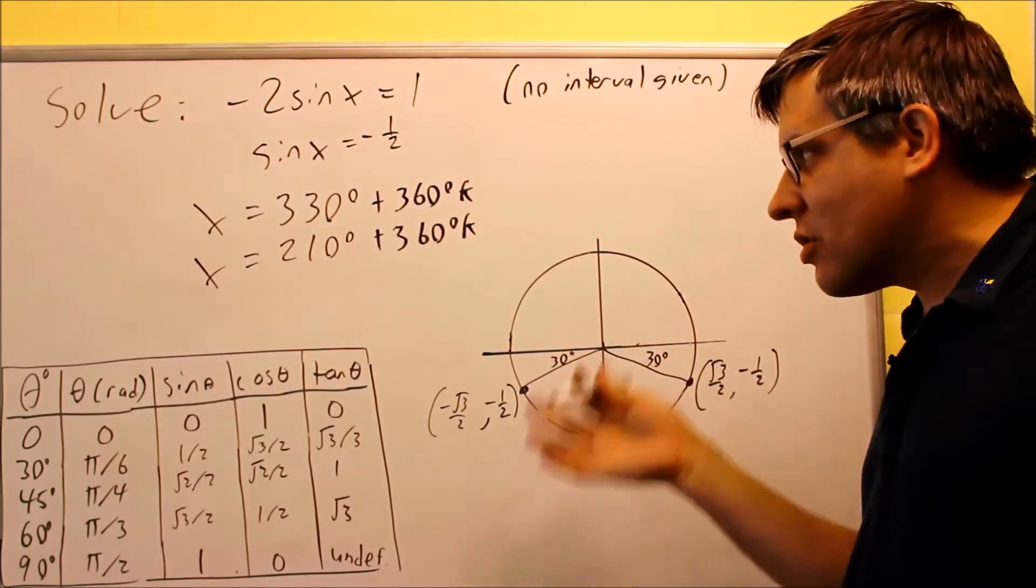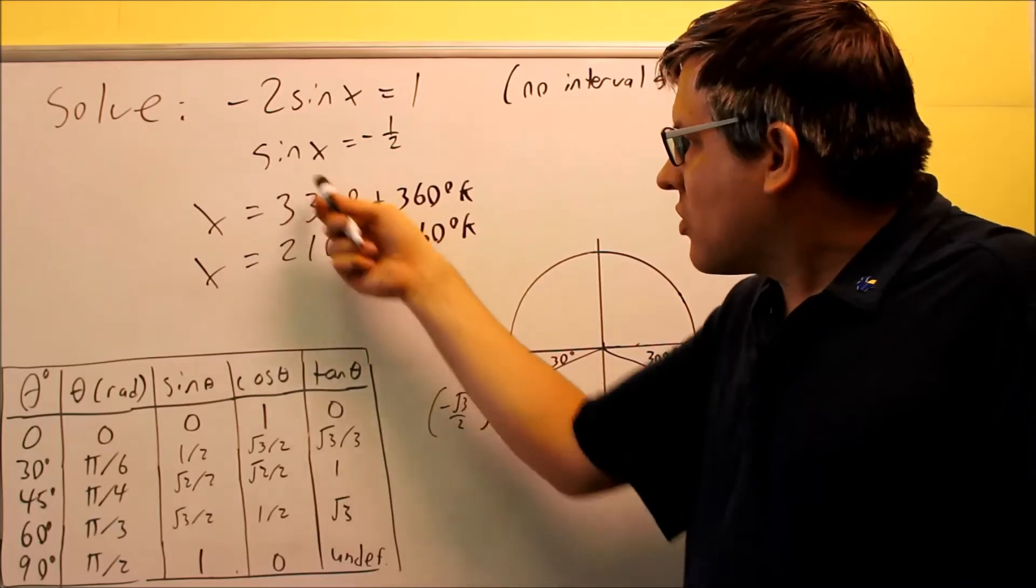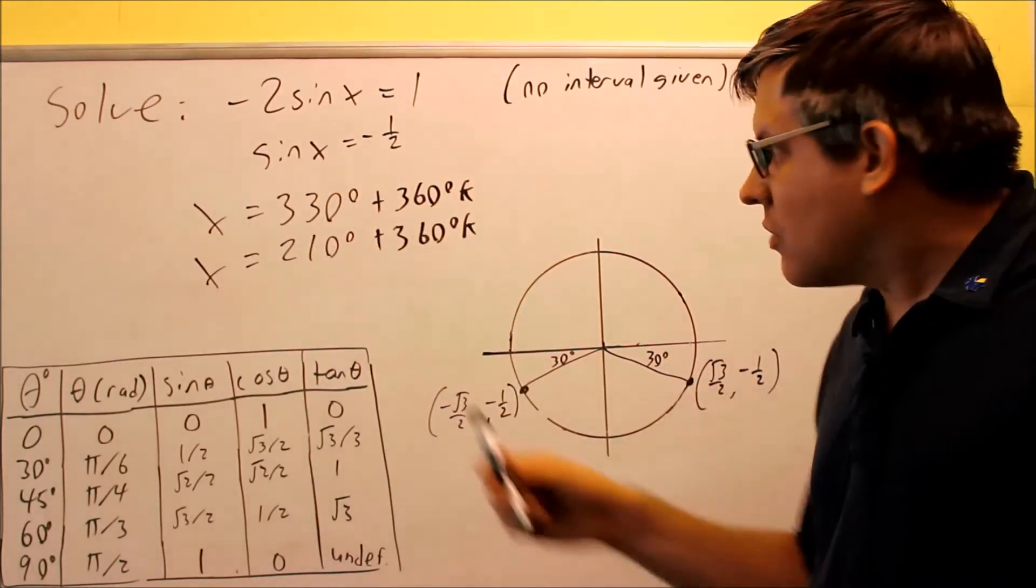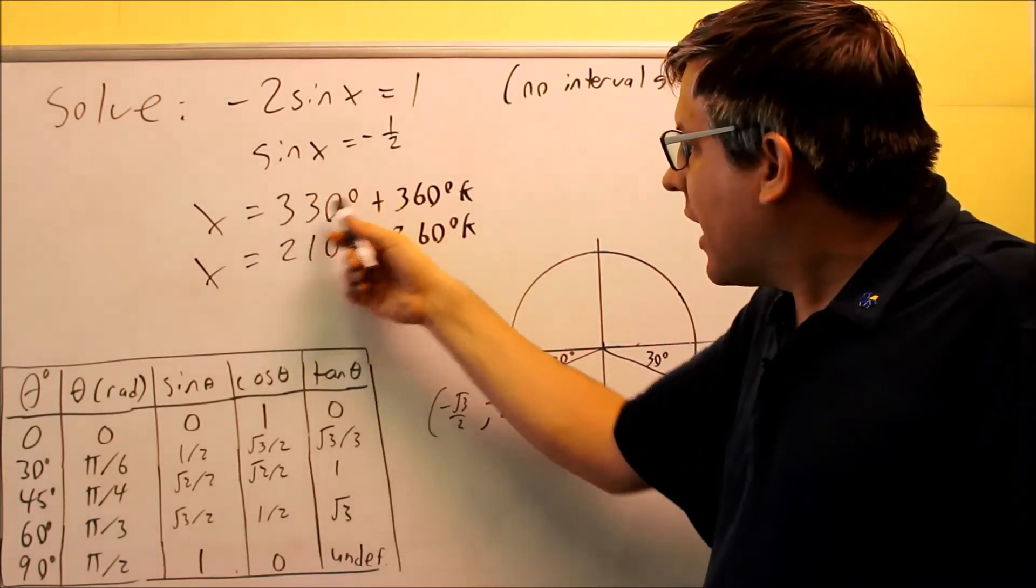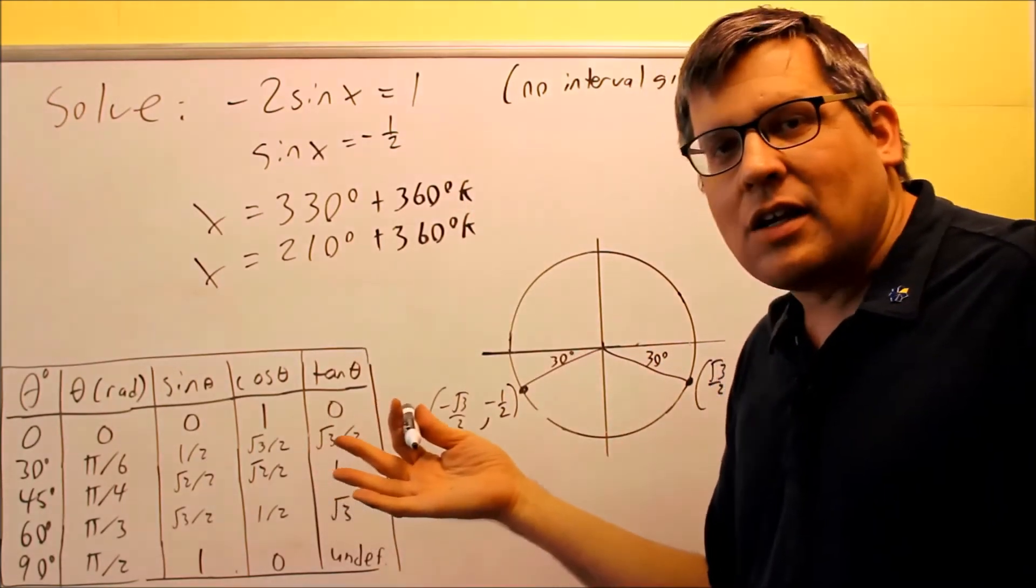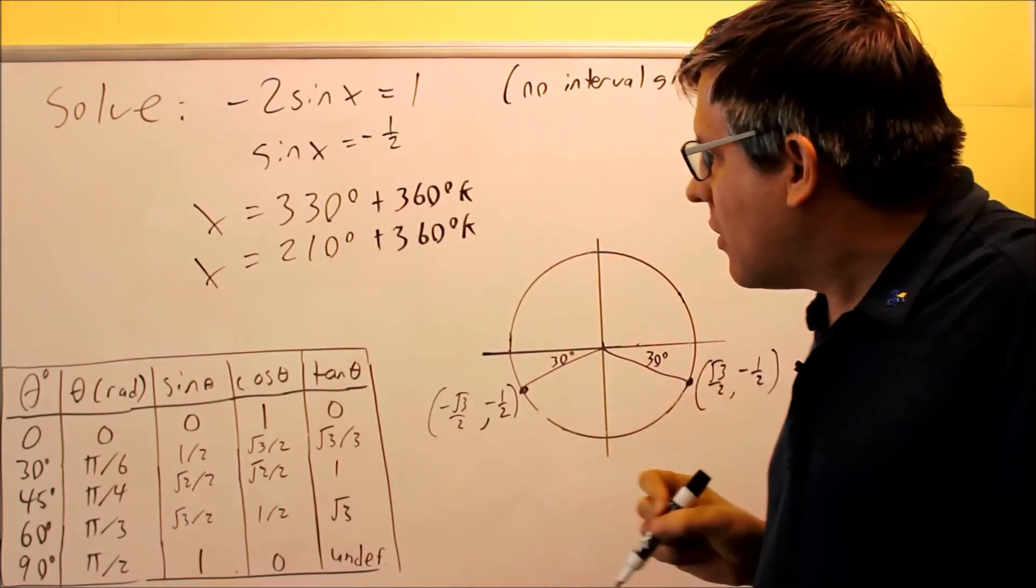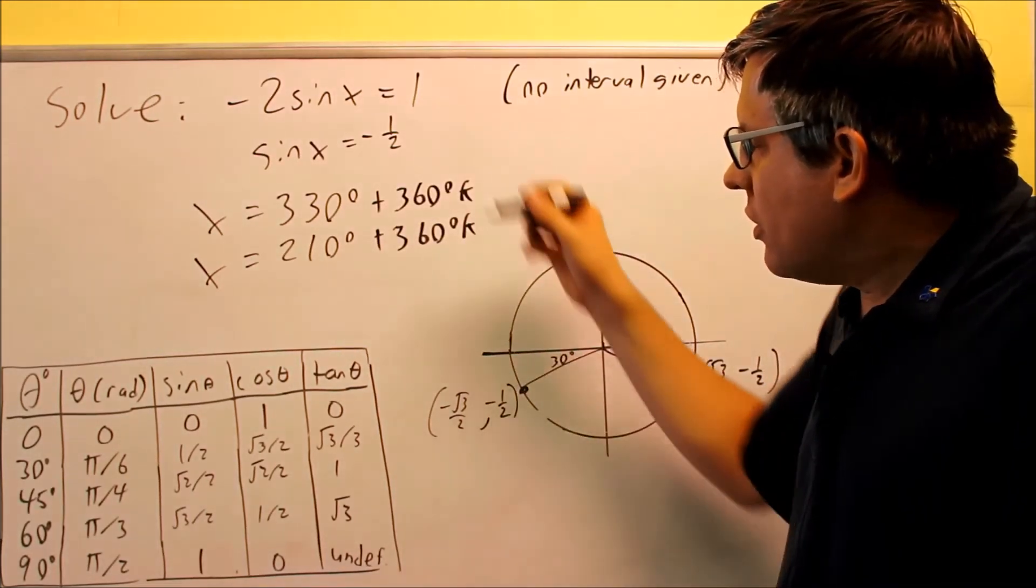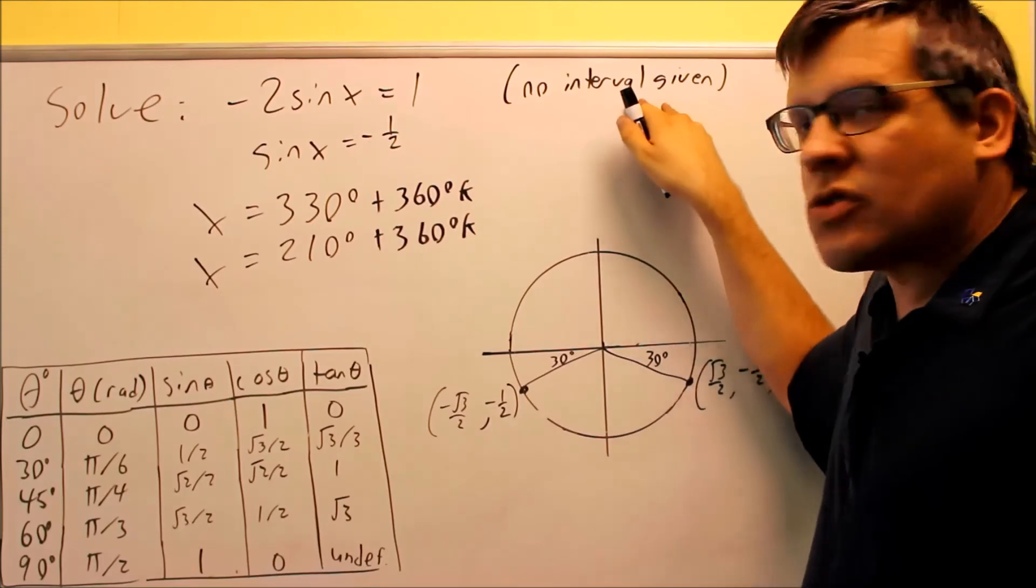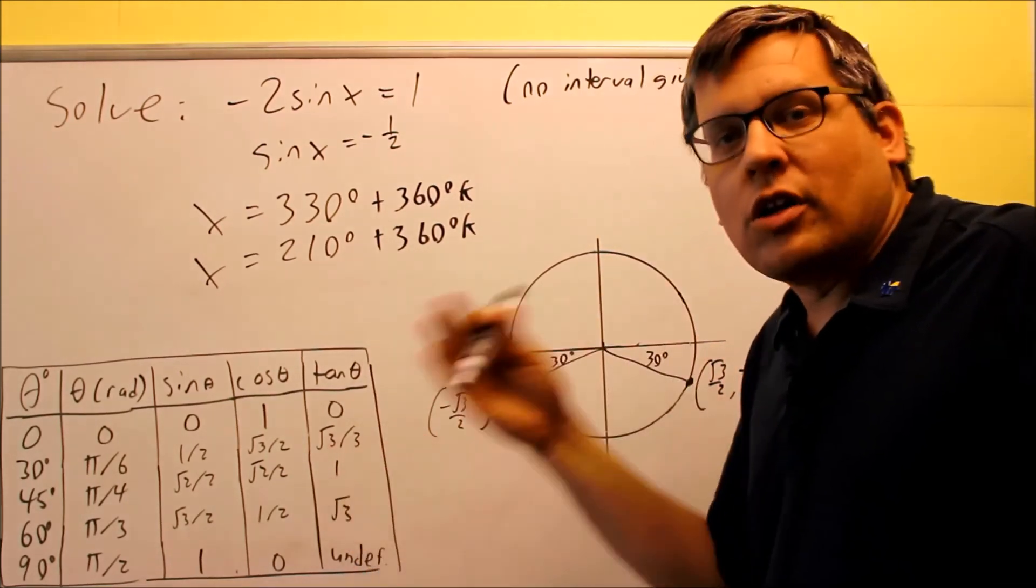I could just as easily express this in terms of radians by doing that. The 360k here, instead of 360, I'd have a 2pi k instead. I could write these in radians if I wanted to, but because no interval was given, it doesn't specify whether we want to write it in radians or degrees.